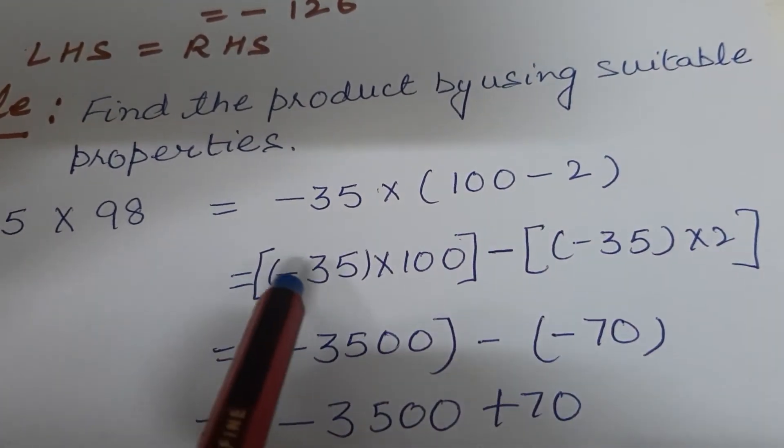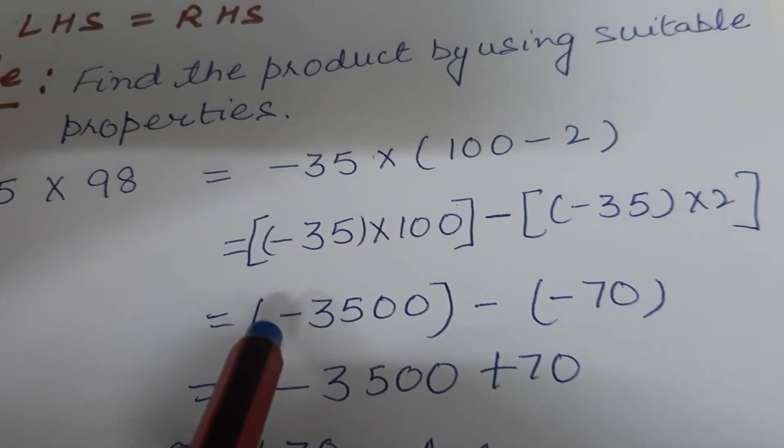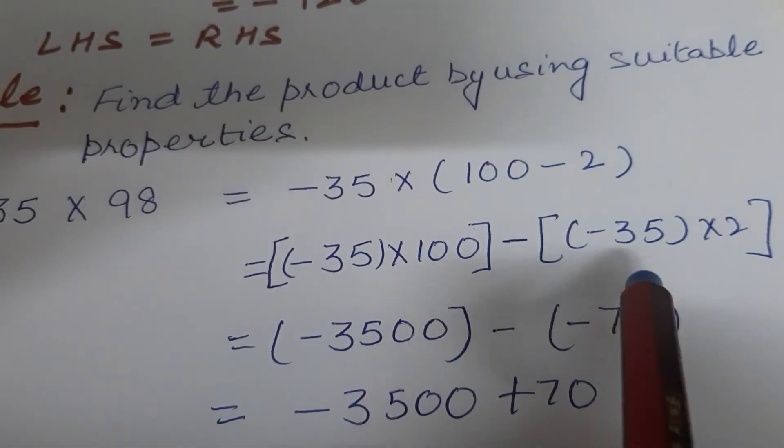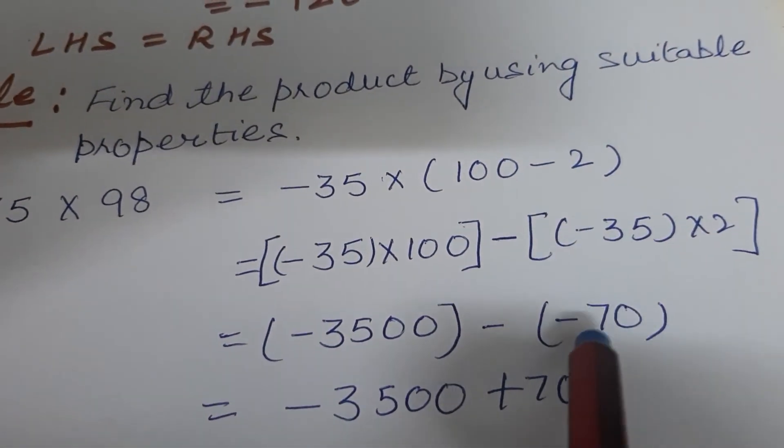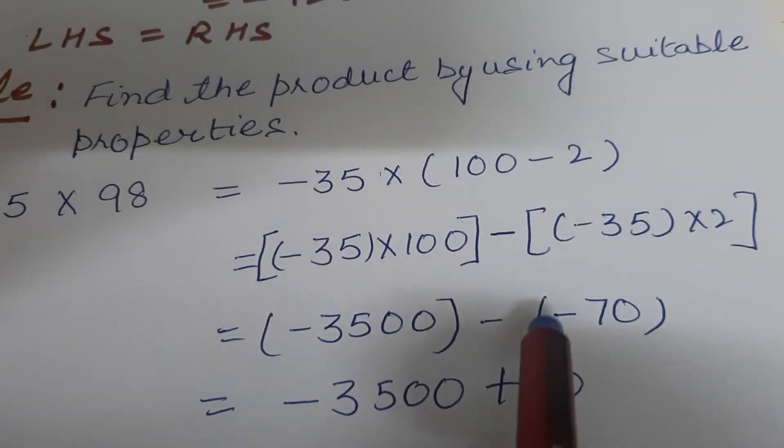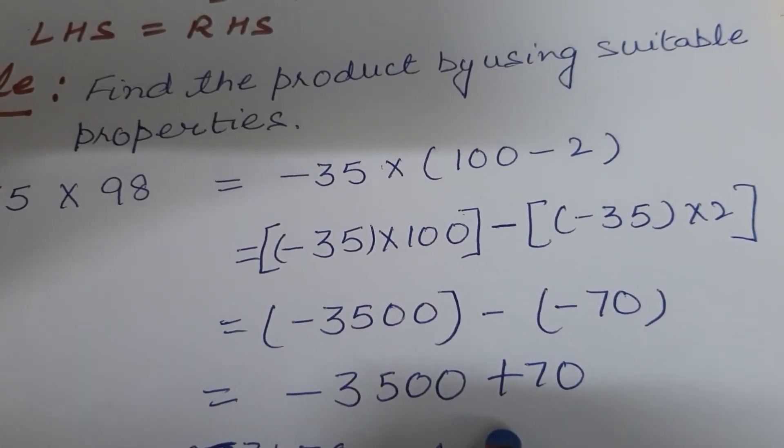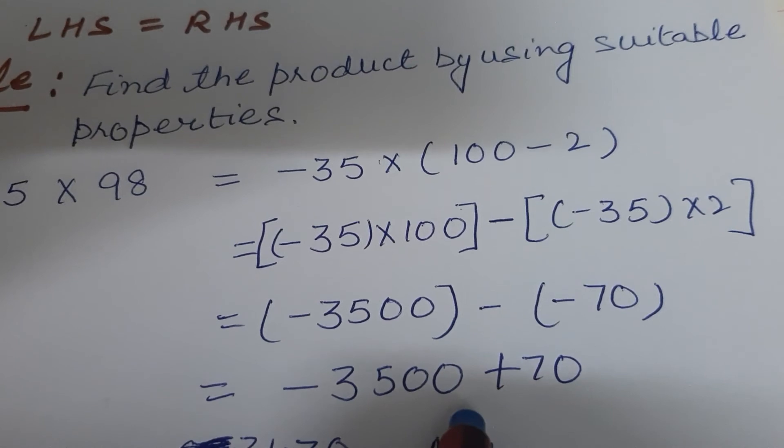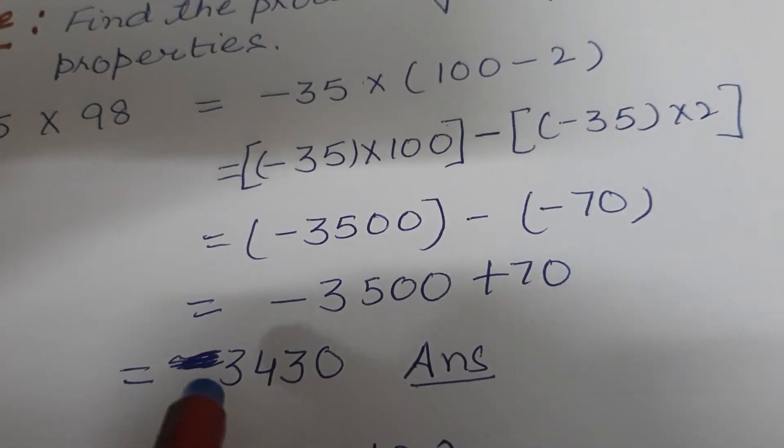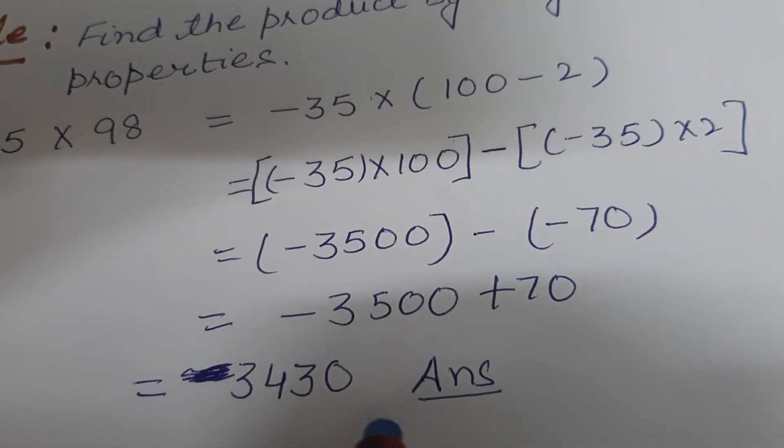So minus 35 times 100 is minus 3500, minus minus 35 times 2 is minus 70. So minus minus is plus. So minus 3500 plus 70 is minus 3430.